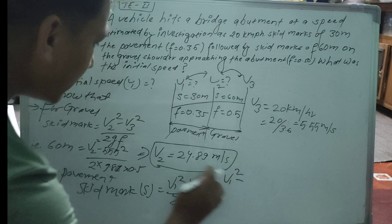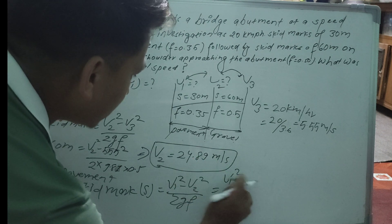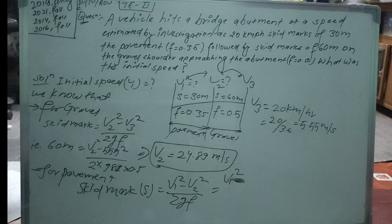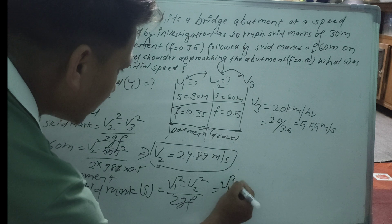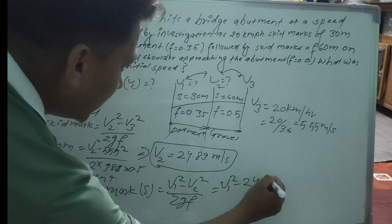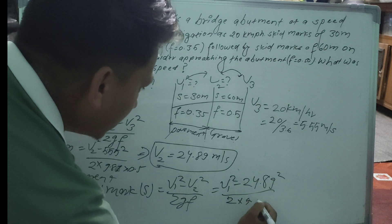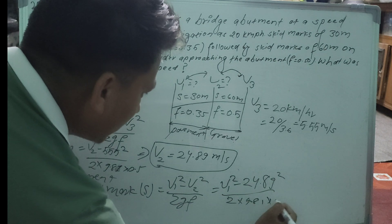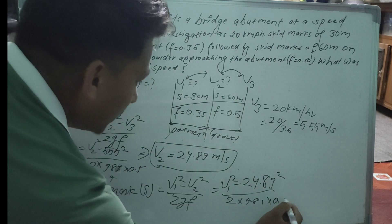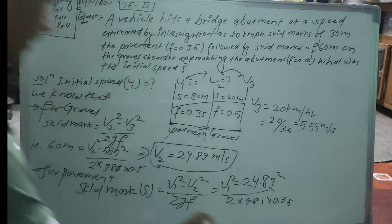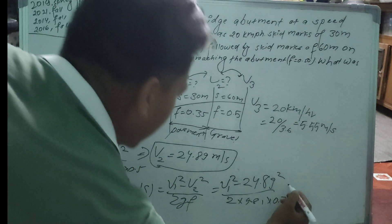Now for the pavement section, we apply the skid mark formula again. V1 squared minus V2 squared equals 2 times G times F times skid mark distance. Plugging in: V1 squared minus 24.89 squared, with G = 9.81 and F = 0.35, over the 30-meter skid mark.